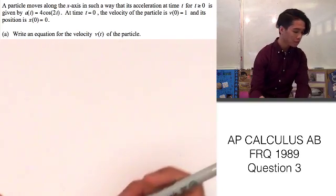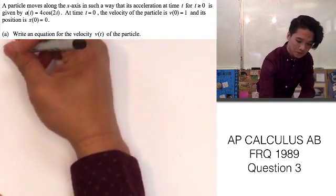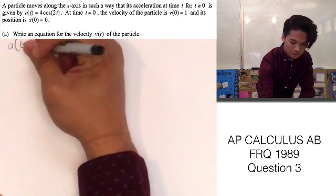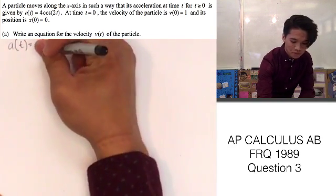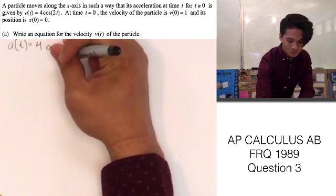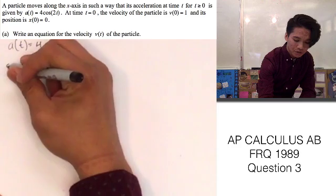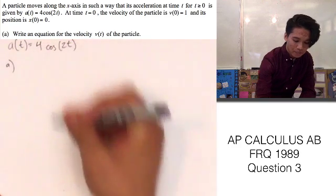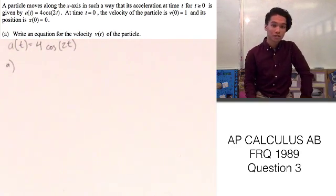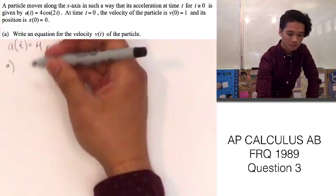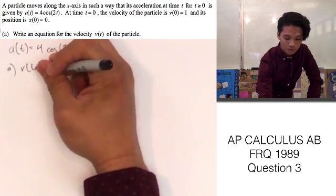The first thing we can do before answering the parts of the question is write its acceleration, which is given in the problem by a(t) = 4cos(2t). Now we can look at part A, which says write an equation for the velocity v(t) of the particle. So we are going to be looking for v(t).